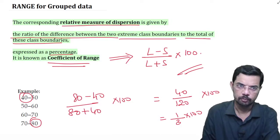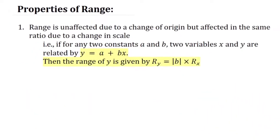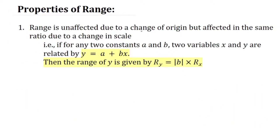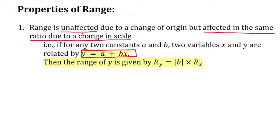Let us discuss some properties of range. Range is unaffected due to change of origin, but affected in the same ratio due to change in scale. That is, if we have the relation y = a + bx and we know the range of x, then we can find the range of y using the formula: Range of y = |b| × Range of x.